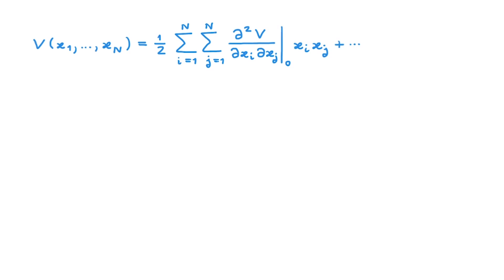Again, close enough to the minimum we can discard all higher order terms and we're left with a quadratic term only. This quadratic term looks somewhat more complicated than the one for a one-dimensional system because there are cross terms which involve the derivatives with respect to two different coordinates here and here.